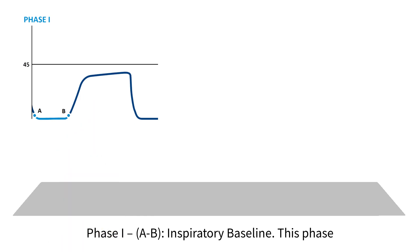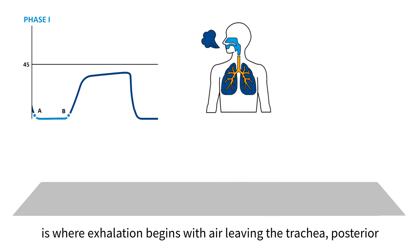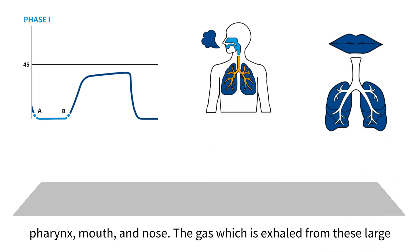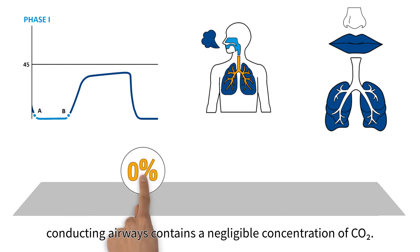This phase is where exhalation begins, with air leaving the trachea, posterior pharynx, mouth, and nose. The gas which is exhaled from these large conducting airways contains a negligible concentration of carbon dioxide.